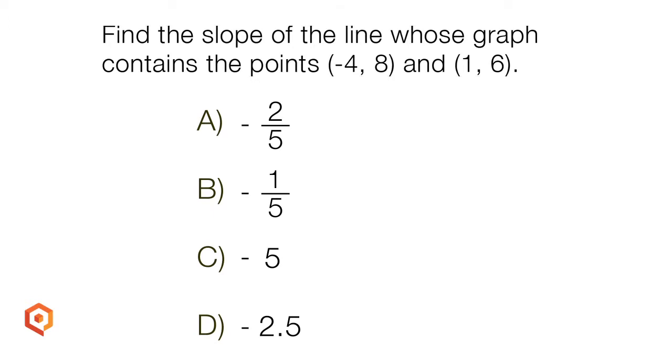Find the slope of the line whose graph contains the points negative 4, 8, and 1, 6. Basically, slope is a ratio that describes the steepness of a line.